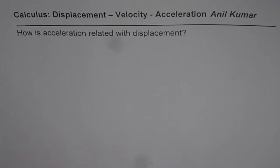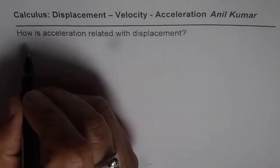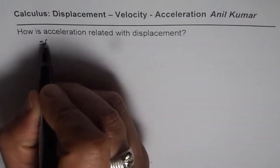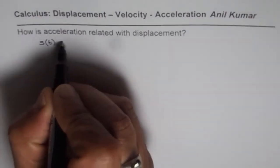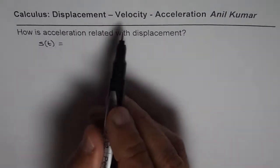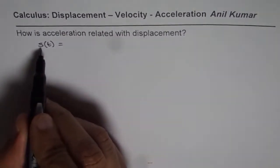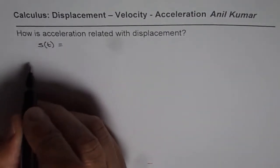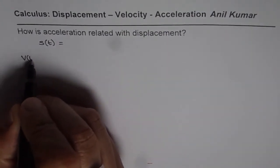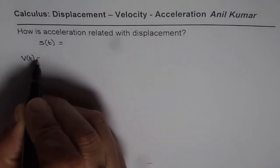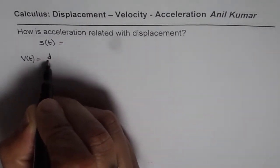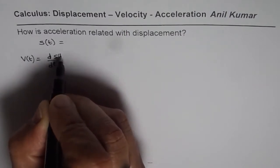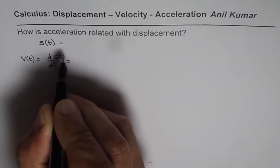As you all know, displacement is normally written in terms of variable s, and we say s is a function of time. Velocity is the derivative of s, or rate of change of displacement. So we say velocity at any instance of time is equal to ds over dt, and s is normally a function of time. So we get velocity.